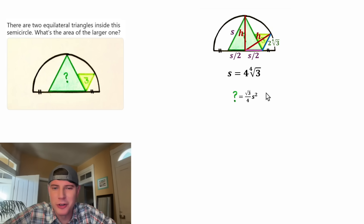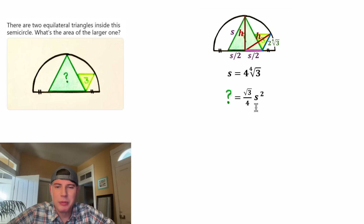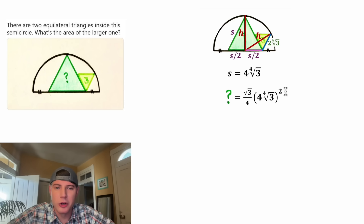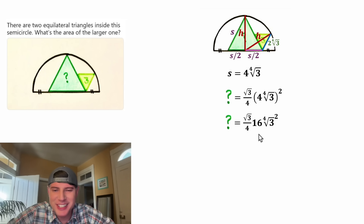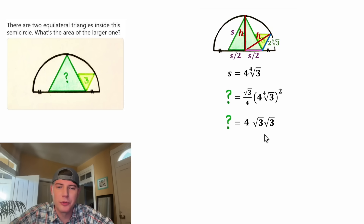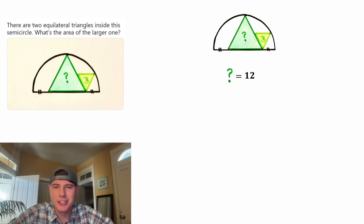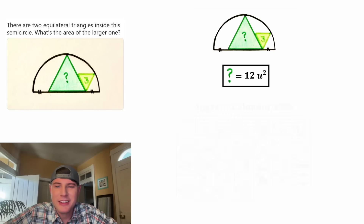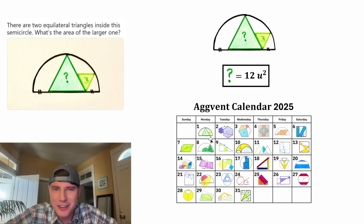Now let's bring this up to solve for our question mark. Plugging S equals 4 times the fourth root of 3 into root three over four S squared: 4 squared is 16, and the fourth root of 3 squared is square root of 3. So we have root three over four times 16 root 3. Rearranging: 16 divided by 4 is 4, and root 3 times root 3 is 3. Four times 3 equals 12. The area of the larger equilateral triangle is 12 square units. This is day 1 of the 2025 AgVENT calendar.